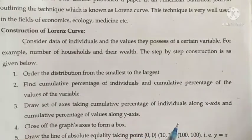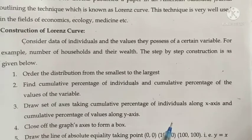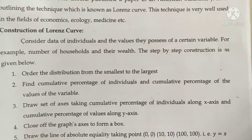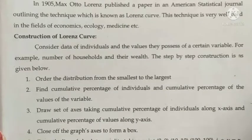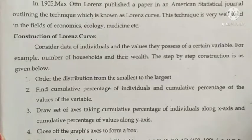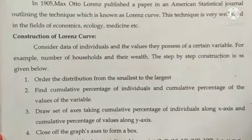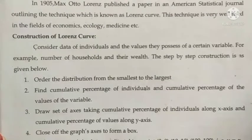First, order the distribution from the smallest to the largest. Next, find the cumulative percentage of individuals and the cumulative percentage of the values of the variable.